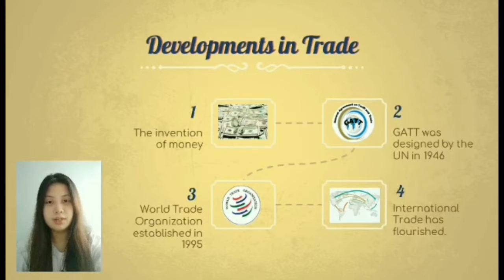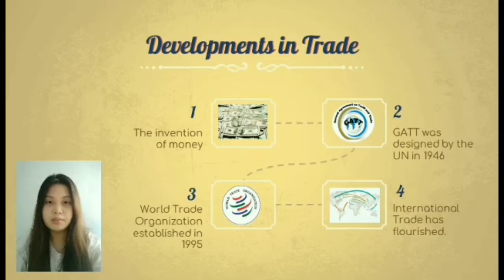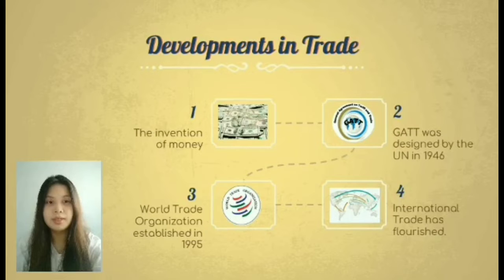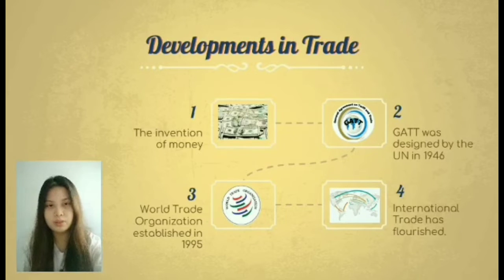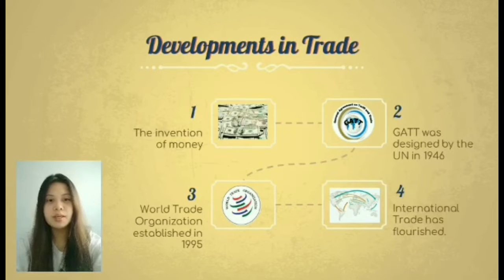Key developments in trade include: first, the invention of money, which made trade simpler; second, in 1946, GATT — the General Agreement on Tariffs and Trade — was established, aiming to increase trade through tariff reduction; and third, the WTO — World Trade Organization — was established in 1995 to deal with the rules of trade between nations. International trade has flourished as transportation costs have decreased and telecommunications have improved.